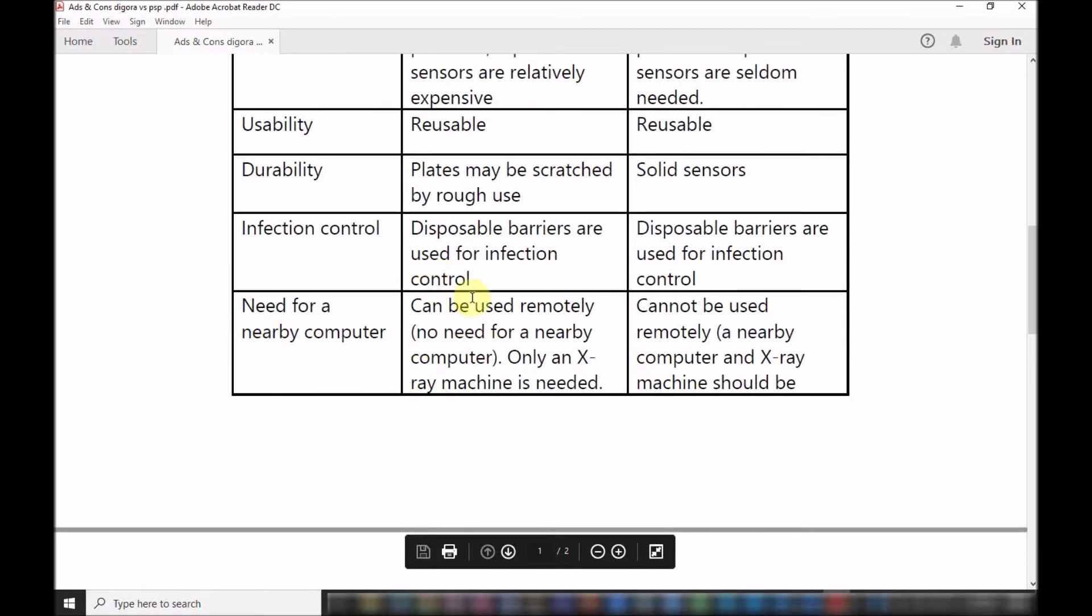The need for a nearby computer: the indirect type can be used remotely so you don't need a computer just next to your clinic because you're going to capture the image and then you take it to a scanner, and then the image will show on a computer which is attached to the scanner. But with the direct type, you cannot. You have to have a computer because these are USB type cables that are directly attached either to a desktop computer or to a laptop computer. Either way, you need a computer just exactly next to the x-ray machine or your clinic so that you will have the image displayed readily on the computer.